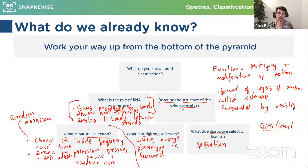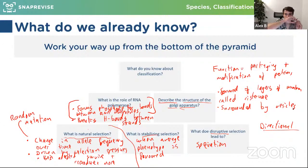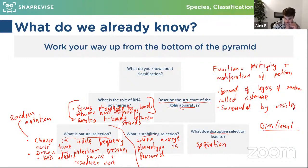The Golgi is a bit like an Amazon fulfillment centre — it packages all the proteins that are going to be exported or sent around the cell into vesicles, and modifies some of them. The vesicles get dragged around the cell via the cytoskeleton; in A2 you talk about motor proteins which actually drag them around, but that's not in the AS spec. Proteins tend not to enter by diffusion — vesicles are used because they can be directed to exactly where they need to go.